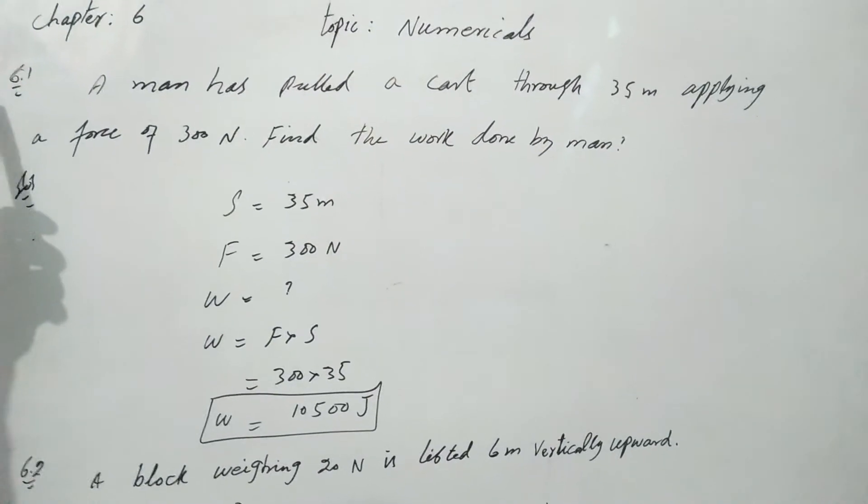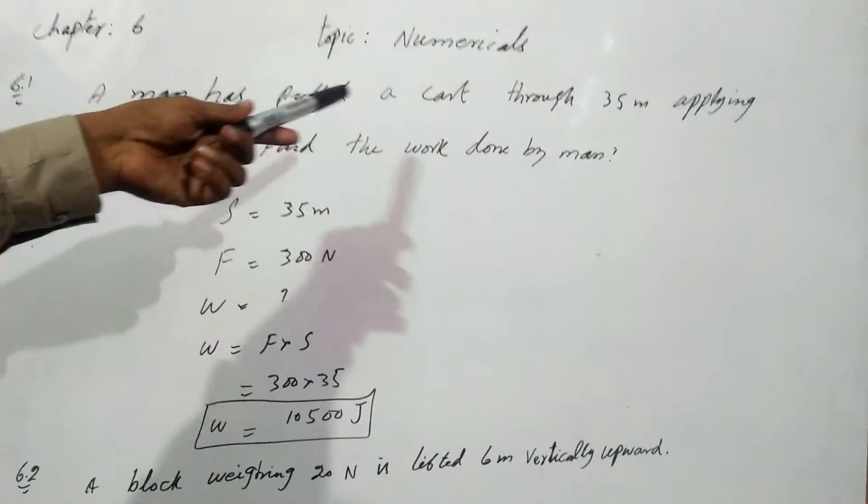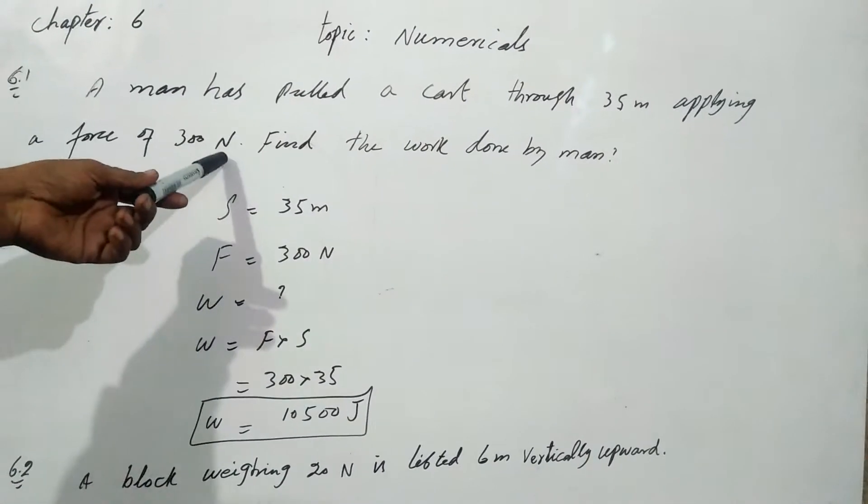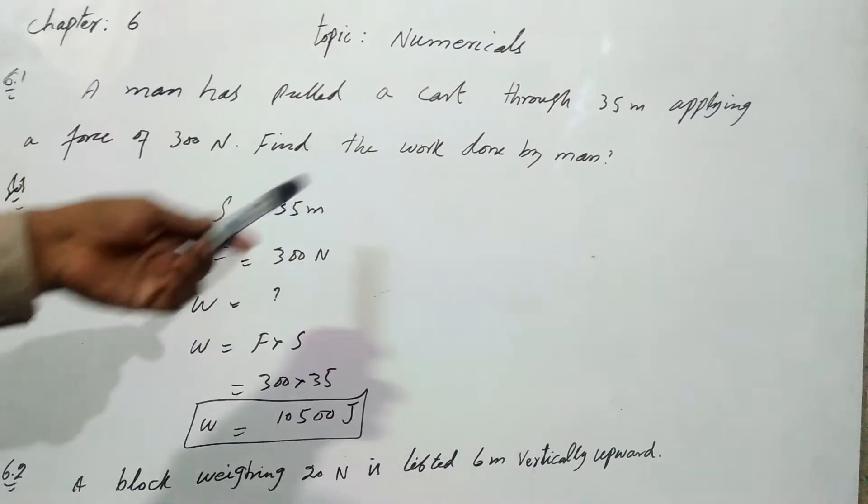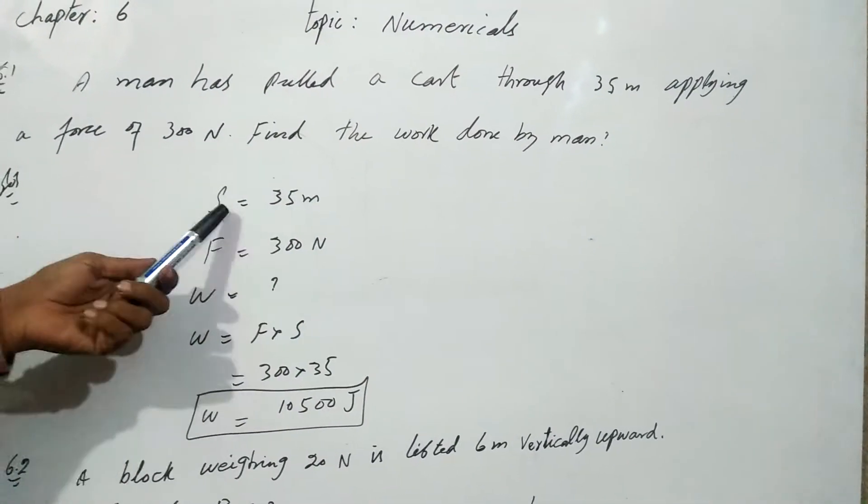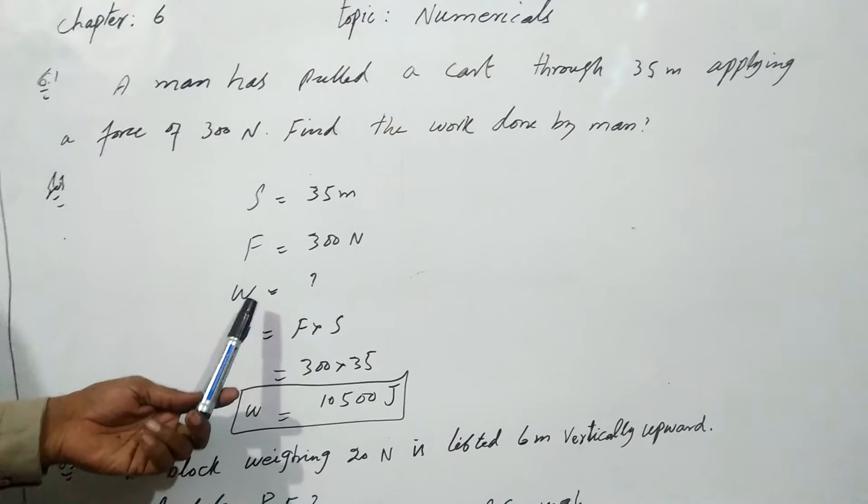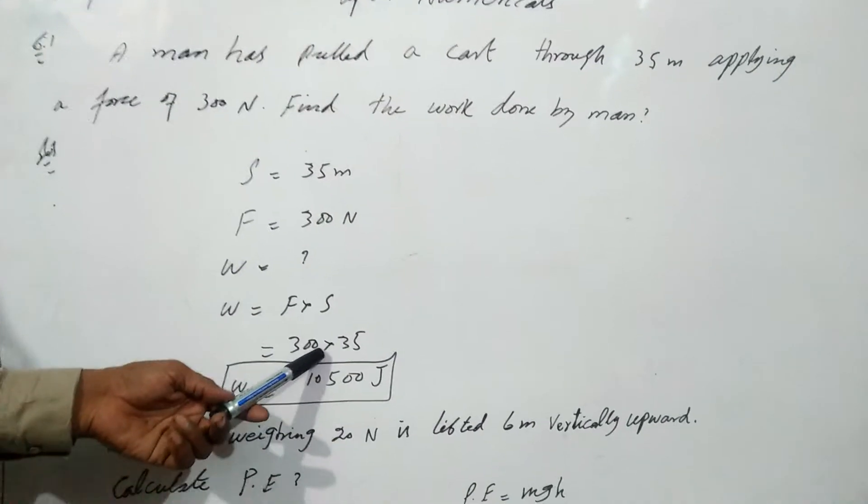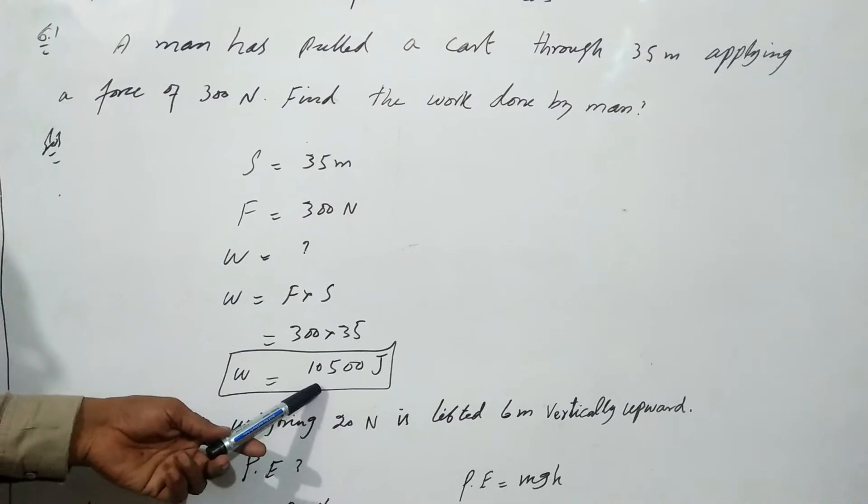Problem 6.1: A man has pulled a cart through 35 meters applying a force of 300 Newtons. Find the work done by man. So s equals 35 meters, force is 300 Newtons. We have to find work. Work equals F into s, so 300 into 35, which is equal to 10,500 joules, which is our work.